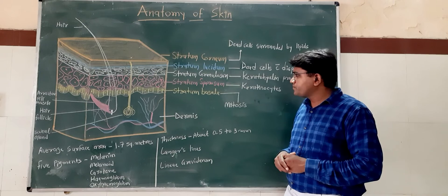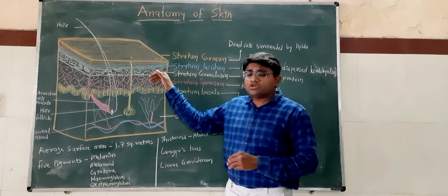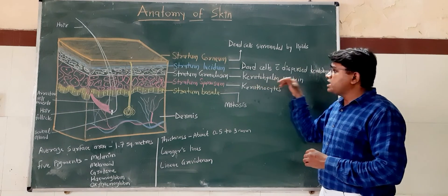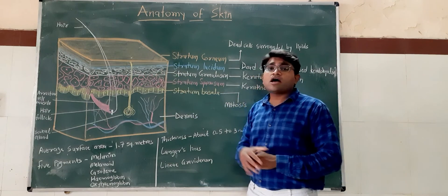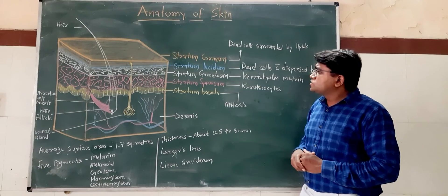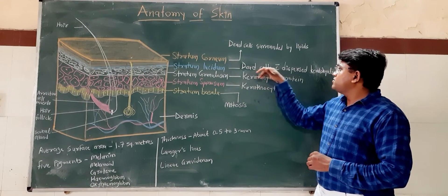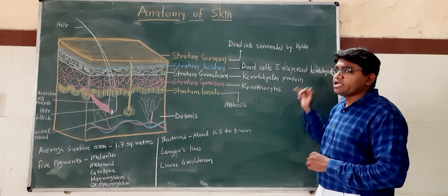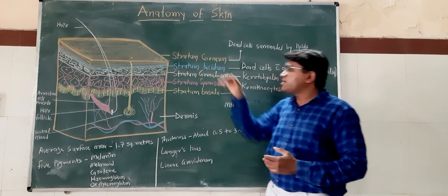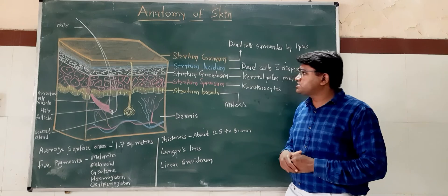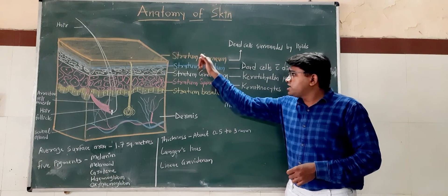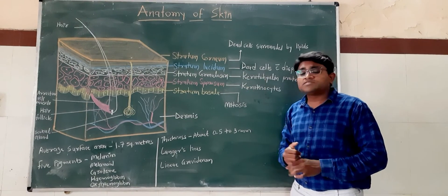Above the stratum spinosum, there is the stratum granulosum. The cells of the stratum granulosum contain granules due to keratohyalin protein, which gives a granular appearance to this stratum. Then above the stratum granulosum is the stratum lucidum, where dead cells with dispersed keratohyalin protein are present — the cells from the granulosum and spinosum layers are dead and placed here. Above that is the stratum corneum, formed by dead cells surrounded by lipids. This stratum is rich in lipids and therefore provides a waterproof structure.